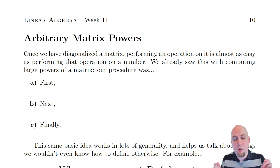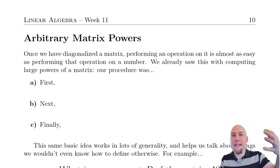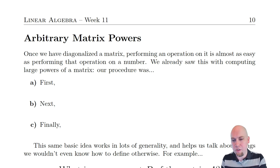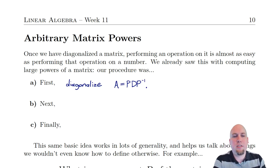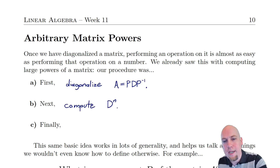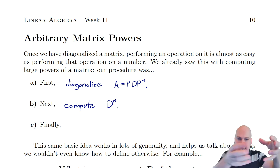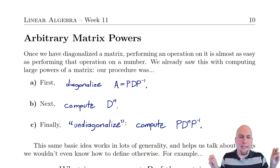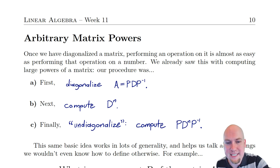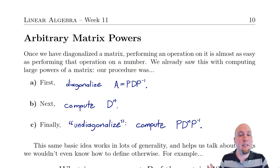What we've done up until now is we've been always considering large integer powers of a matrix — the zeroth power, the first, the second, the third — always a whole number power. The way we computed this via diagonalization was: we would first diagonalize that matrix, compute the large power of the diagonal piece D to the power n, and then undiagonalize — multiply back together with P and P inverse — and that would give us A to the power n.